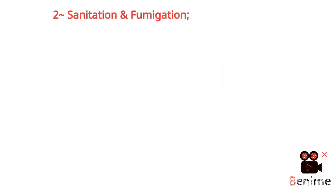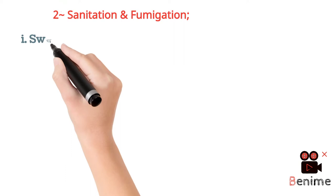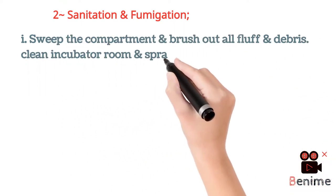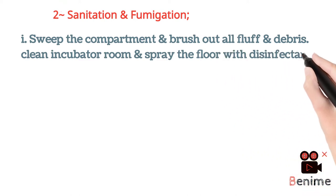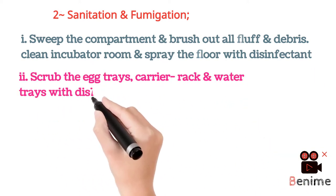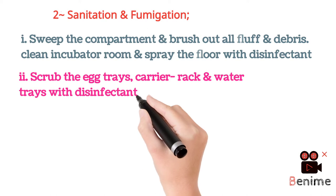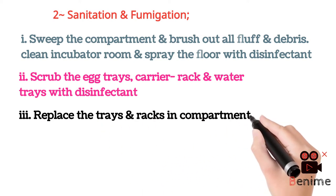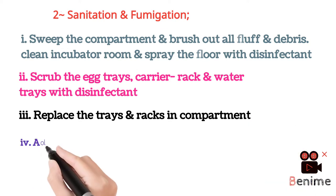The second factor is sanitation and fumigation of the incubators as well as the eggs. First of all, sweep the compartment of the incubator and brush out all the filth and debris material from the incubator, then clean the incubator room and spray the floor with any kind of disinfectant. Second, scrub the egg trays, carrier rigs, and water trays with disinfectant available in our markets, and then replace the trays and rigs in their appropriate sites in the incubator.